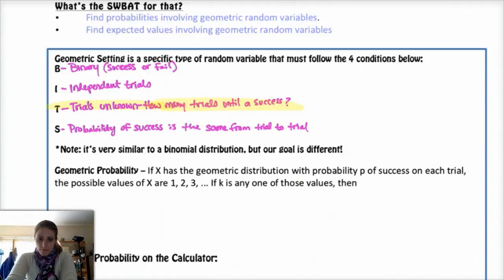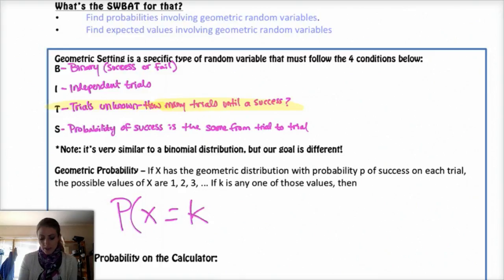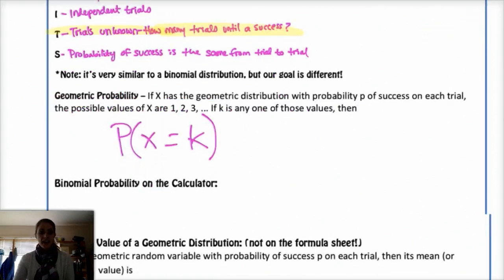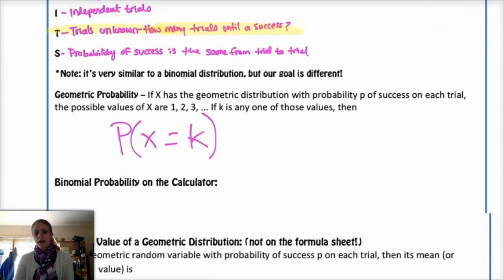So your probability, say X is a geometric distribution, probability p of success on each trial. Possible values of X are 1, 2, 3, because you can't have zero trials before success. You have to at least try once. And if k is any one of those values, then we want to know the probability that X is equal to k. So basically, you get your first success on the kth try. And that's essentially equal to the probability of failing, failing, failing, failing, failing, k minus 1 times. And then on the kth time, you want a success.